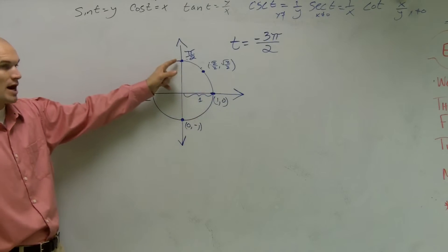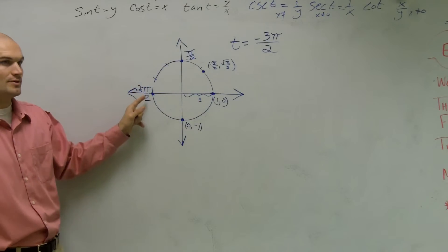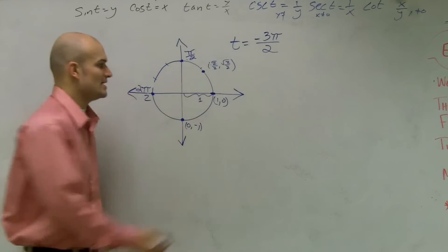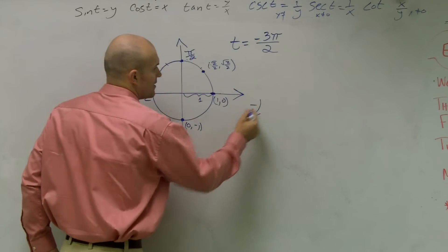So here's 0, go to pi over 2, and that's 2 pi over 2. Now the big distinction, however, is this is a negative. So that means we actually need to go in that direction.